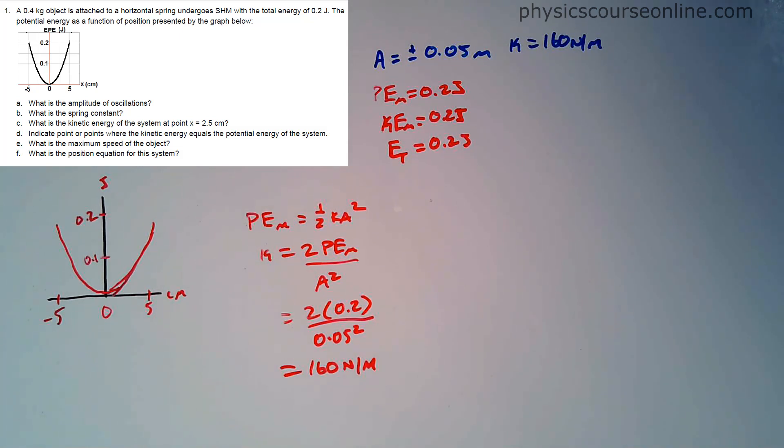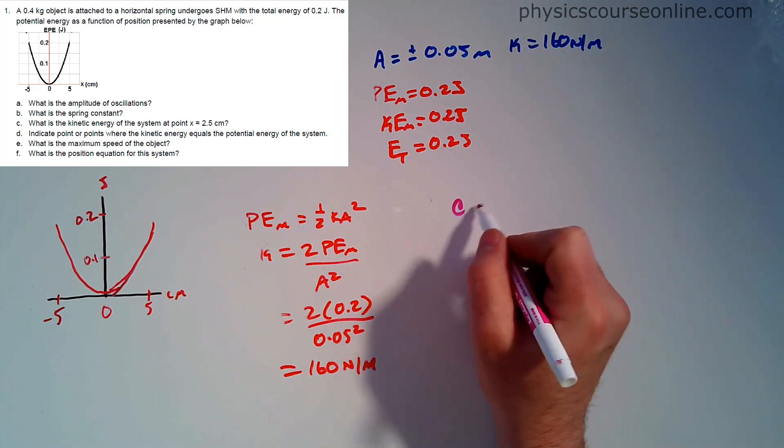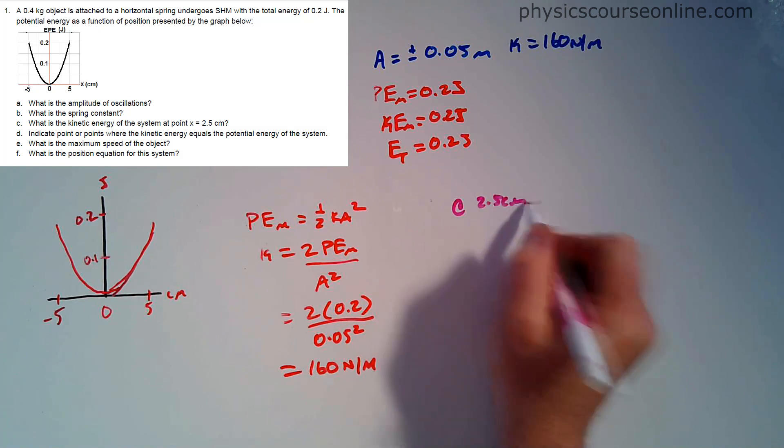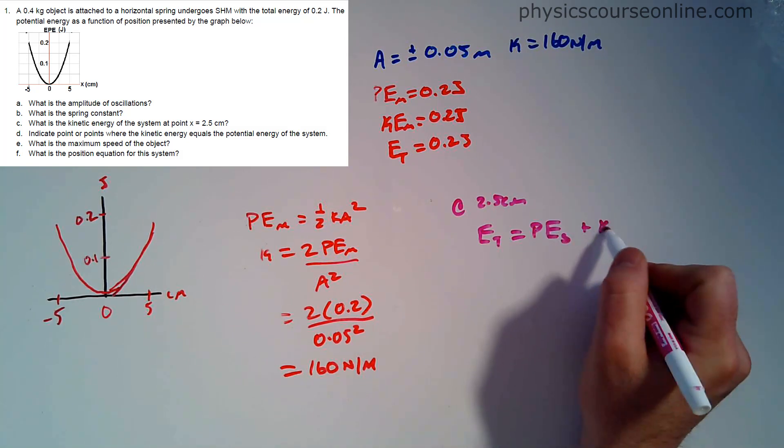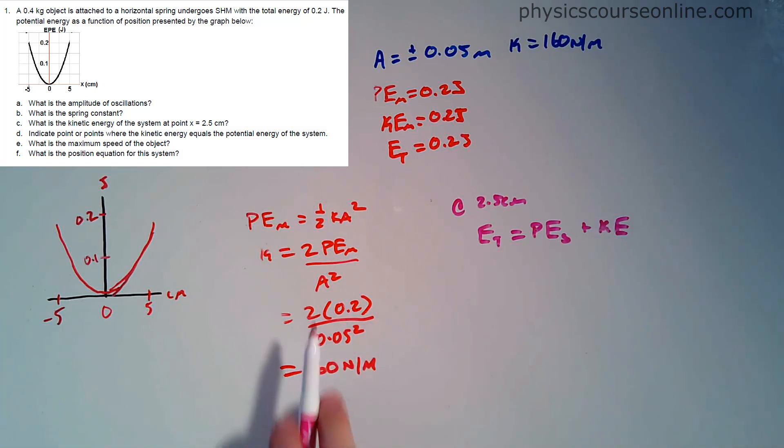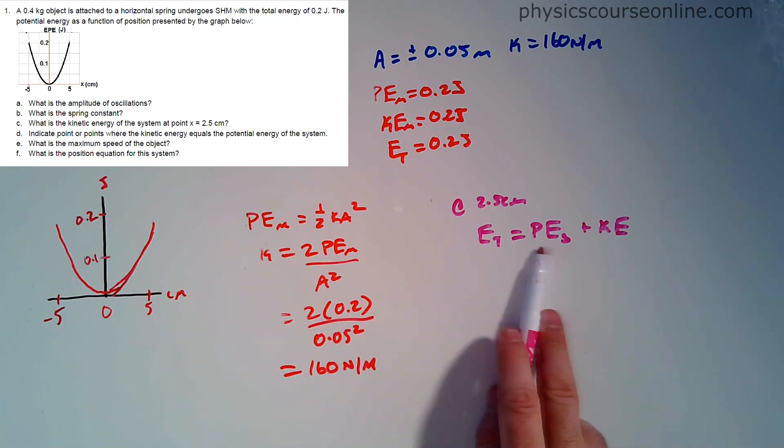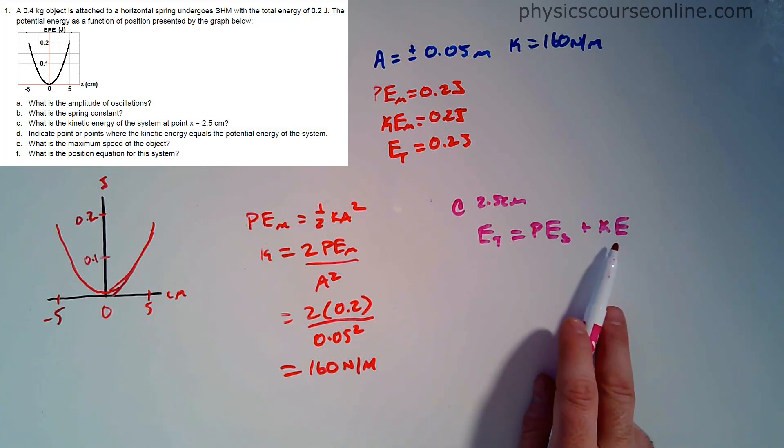Part C, what is the kinetic energy of the system at x equals 2.5 centimeters? We're now at this location here halfway through. We want to know the energy right here, and you can't just read it. Don't be like, oh half the distance, half the energy. That's not going to be true either. At that position, we know the energy of the system is going to be comprised of both potential energy and kinetic energy. We're not at the equilibrium, we're not at the amplitude. We have both forms of energy here.